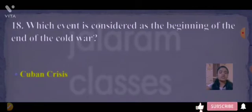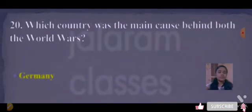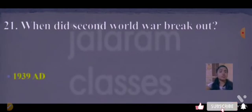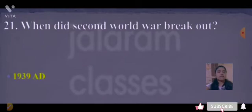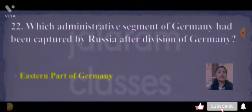Next: which event is considered as the beginning of the end of the Cold War? Answer is the Cuban Crisis. Next: name the policy adopted by some nations not to align with any power block during the Cold War. Answer is the Non-Aligned Policy. Next: which country was the main cause behind both the World Wars? Answer is Germany. Next: when did the Second World War break out? Answer is 1939-1945. Next: which part of Germany was captured by Russia after the division of Germany? Answer is the Eastern part of Germany.